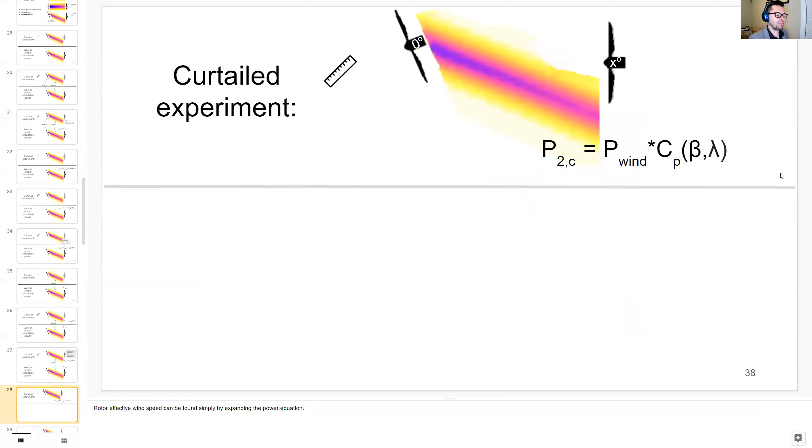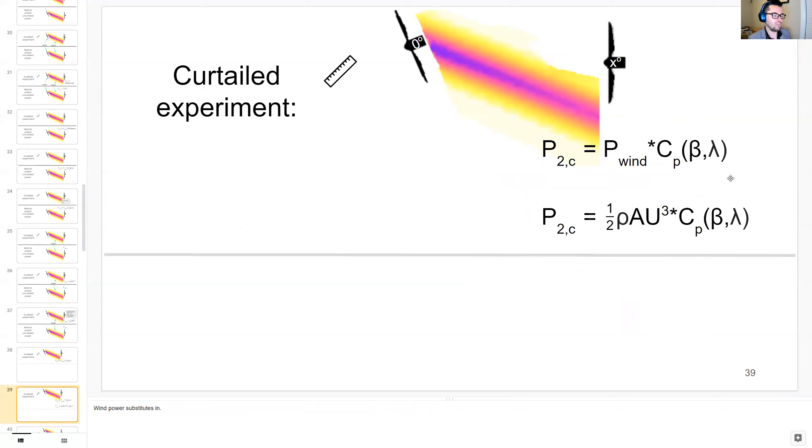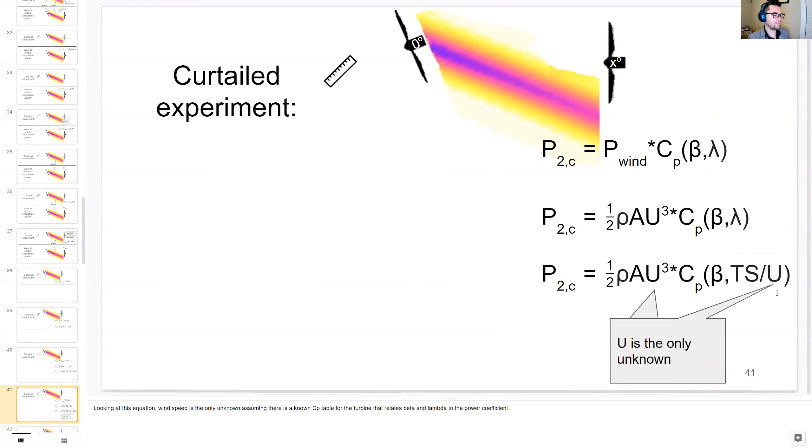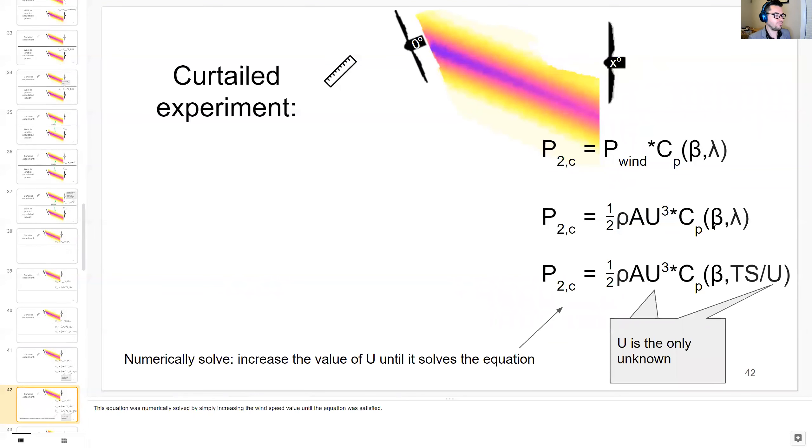Rotor effective wind speeds can be found simply by expanding the power equation as shown here. Wind power equation substitutes in for the power of wind. And the tip speed ratio is expressed as the tip speed omega R divided by the wind speed U. Looking at this equation, wind speed is the only unknown, assuming there is a known CP table for the turbine that relates beta and lambda to the power coefficient. And then from here you could numerically solve by simply increasing the wind speed value until this equation is satisfied.